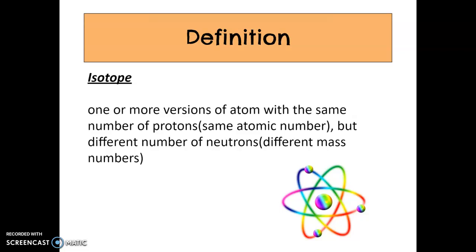We can't change the proton number of an element and have it still be the same element, because our proton number determines the identity. For example, magnesium has atomic number 12. If we change the protons, we would no longer have magnesium. However, if we manipulate the neutrons and have a different amount of neutrons, the mass of the atom can change. But as long as the atomic number is 12, it's still an atom of magnesium — just with different masses. So for an isotope, it's the same atomic number but a different number of neutrons.